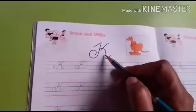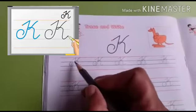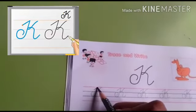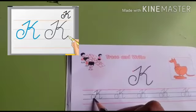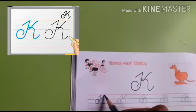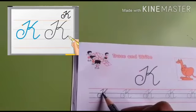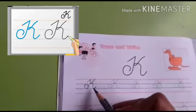Now we will learn capital K. Put your pencil point between first and second line. Go up with a slant line till the top line and come down till the third line and turn it back side. This is capital K.